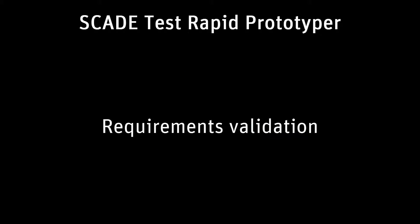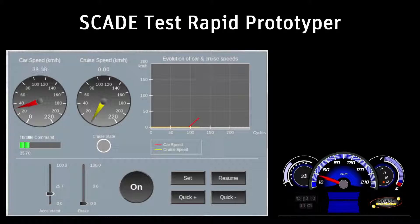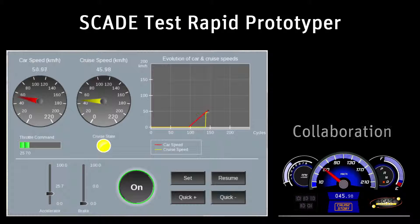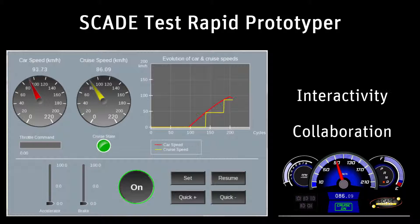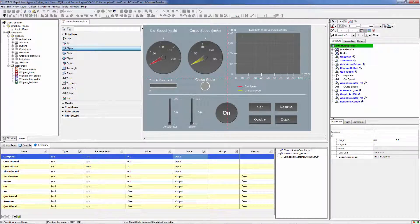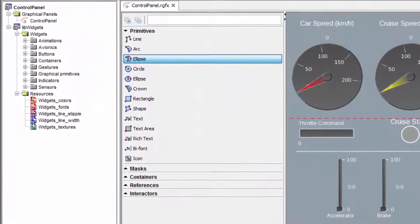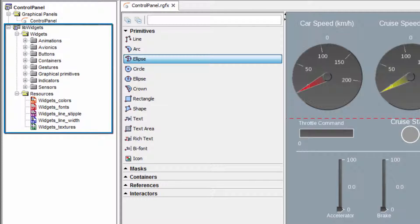SCADE Test Rapid Prototyper enhances the requirements validation experience with powerful, easy to design, and interactive graphical panels. It provides collaboration capabilities among project stakeholders. Standalone executables are generated with no runtime fee, allowing efficient communication among model designers and their customers and suppliers. Validation engineers can quickly build simulation control panels using components from a predefined, yet extensible, widgets library.